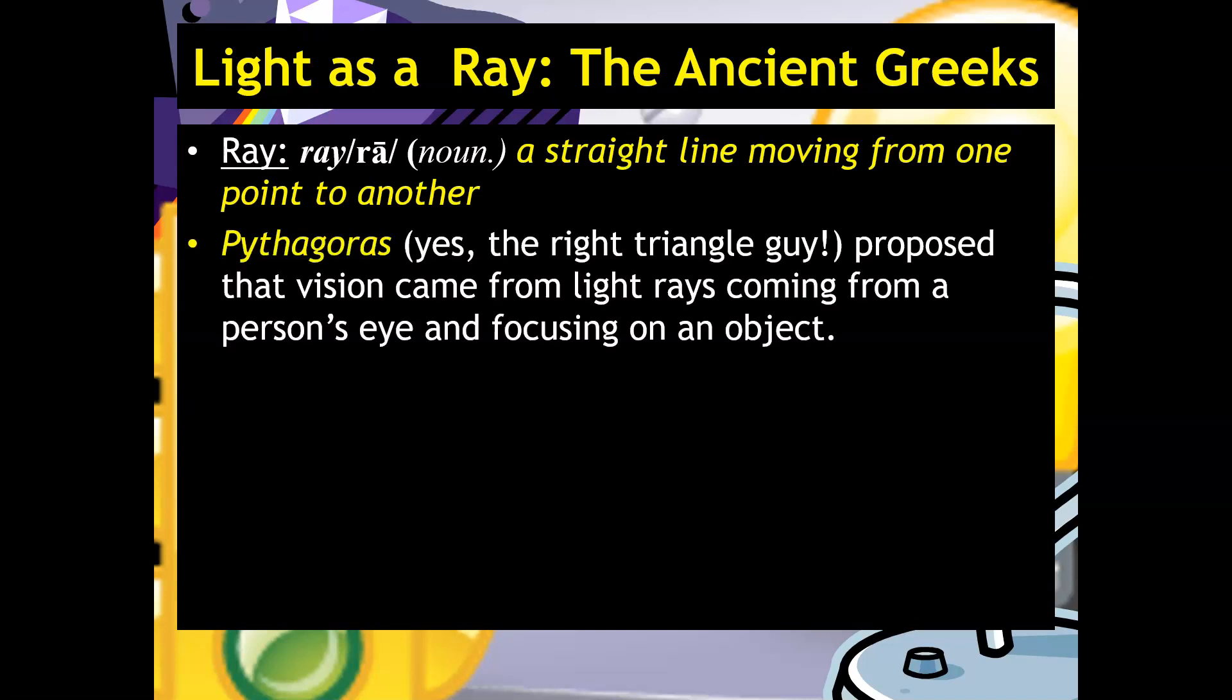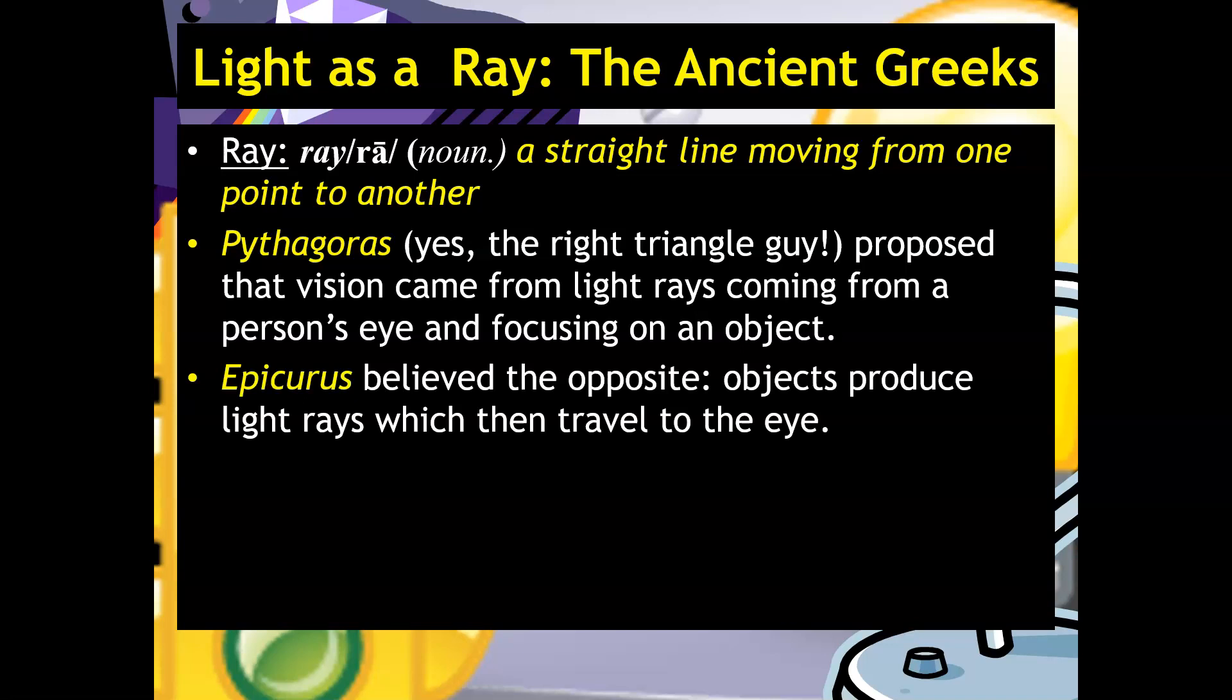But for right now, let's go back to the ancient Greeks. A ray is said to be a straight line moving from one point to another. And Pythagoras, yes, the right triangle guy, proposed that vision came from light rays coming from a person's eye and focusing on an object. However, the opposite was true for Epicurus. He believed the opposite, that objects produce light rays, which then travel to the eye.